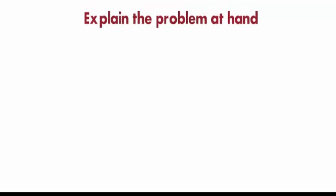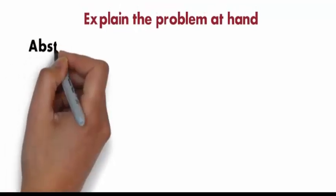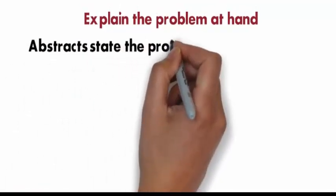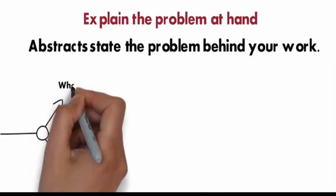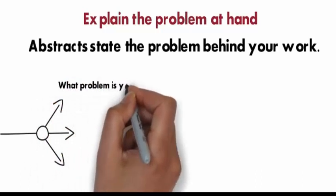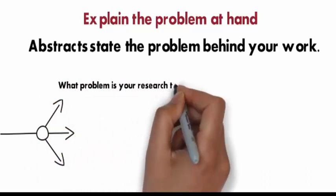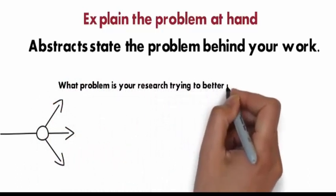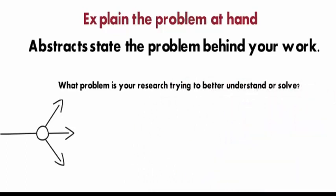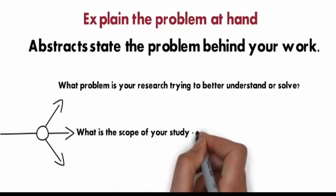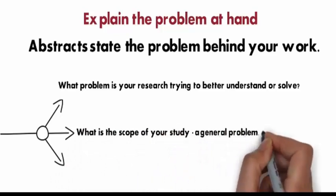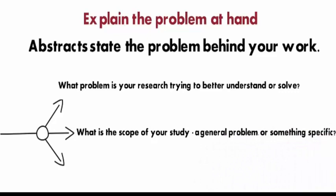Explain the problem at hand. Abstracts state the problem behind your work. Think of this as the specific issue that your research or project addresses. You can sometimes combine the problem with your motivation, but it's best to be clear and separate the two. What problem is your research trying to better understand or solve? What is the scope of your study—a general problem or something specific? What is your main claim or argument?